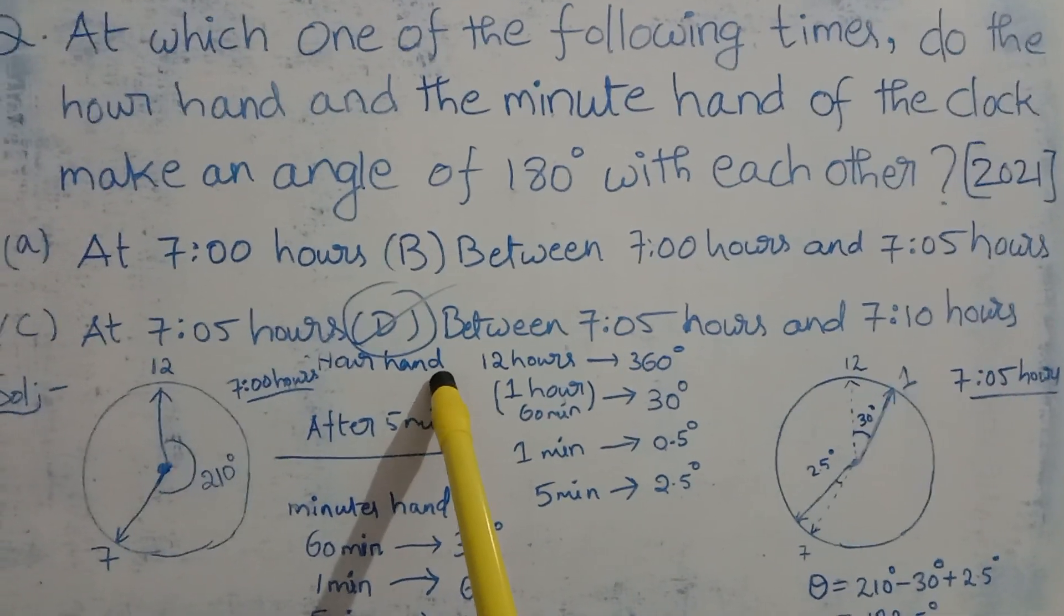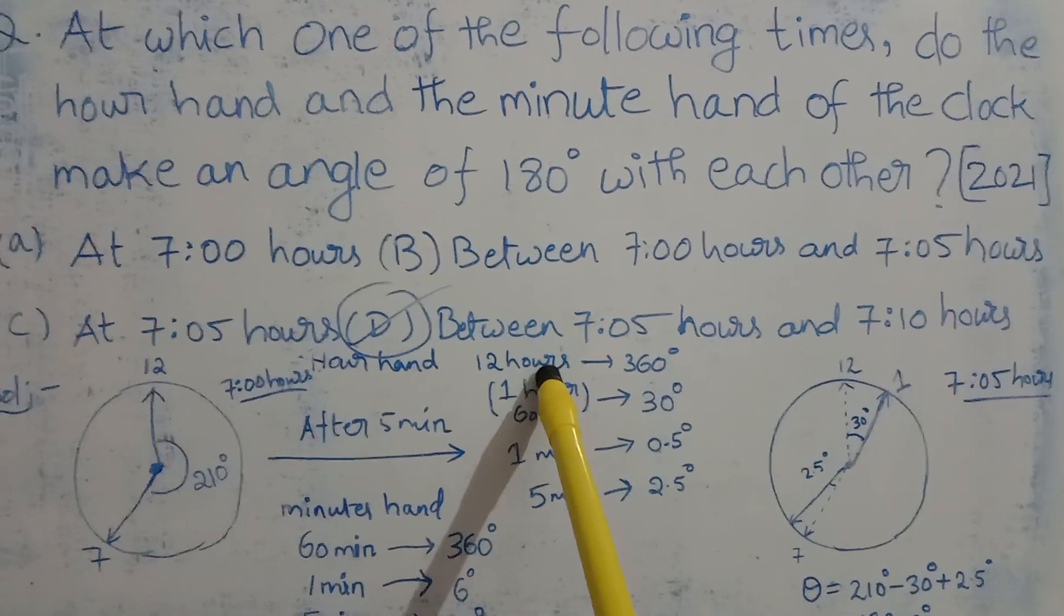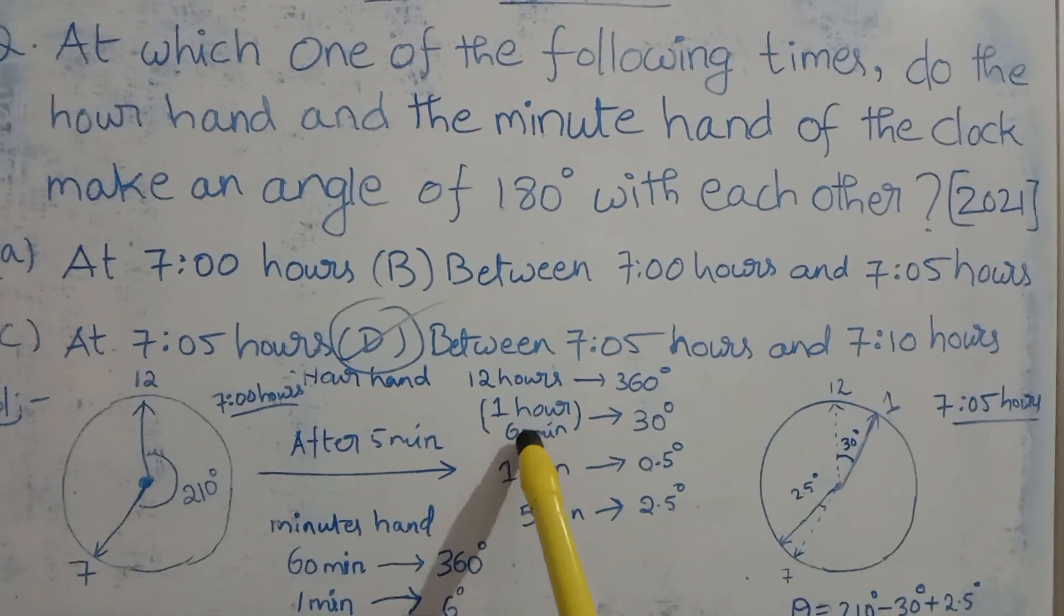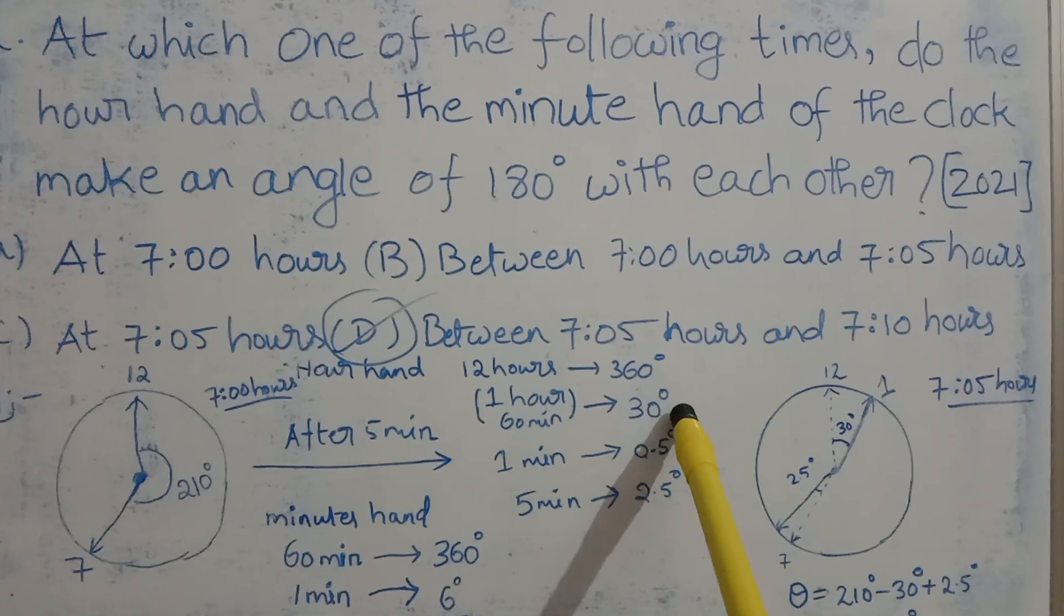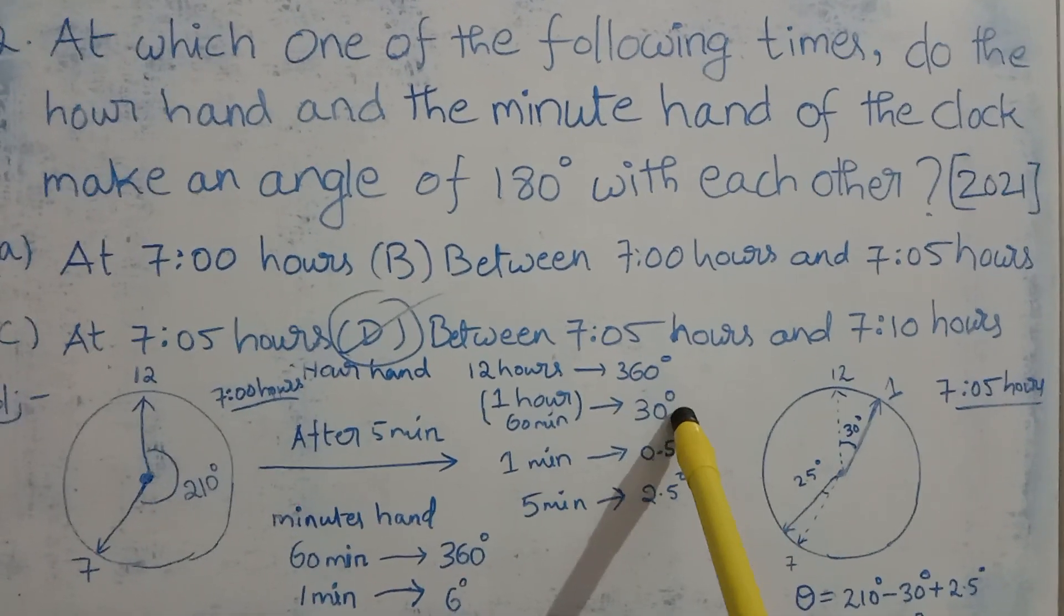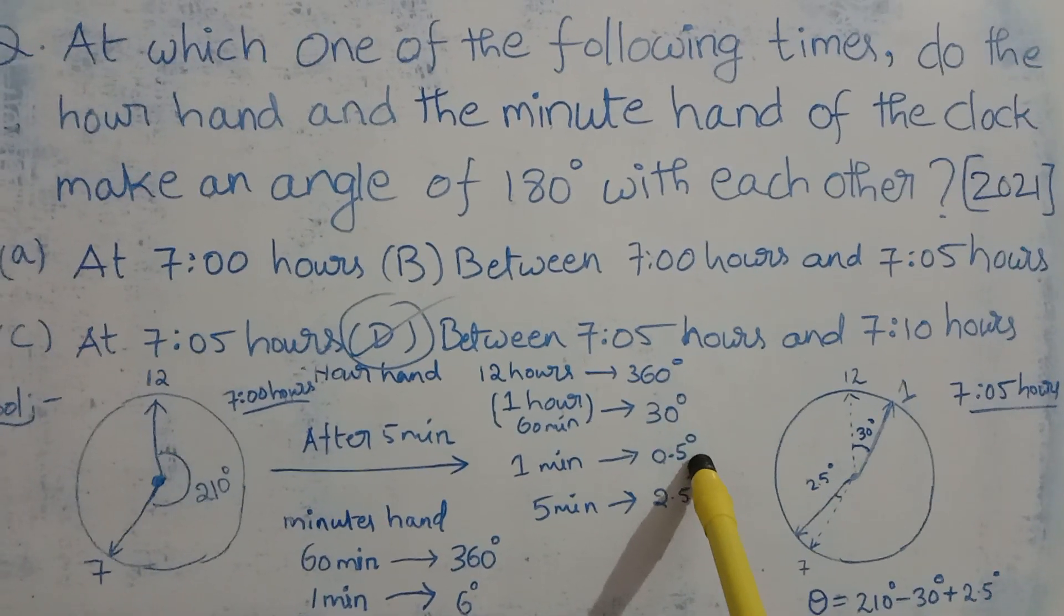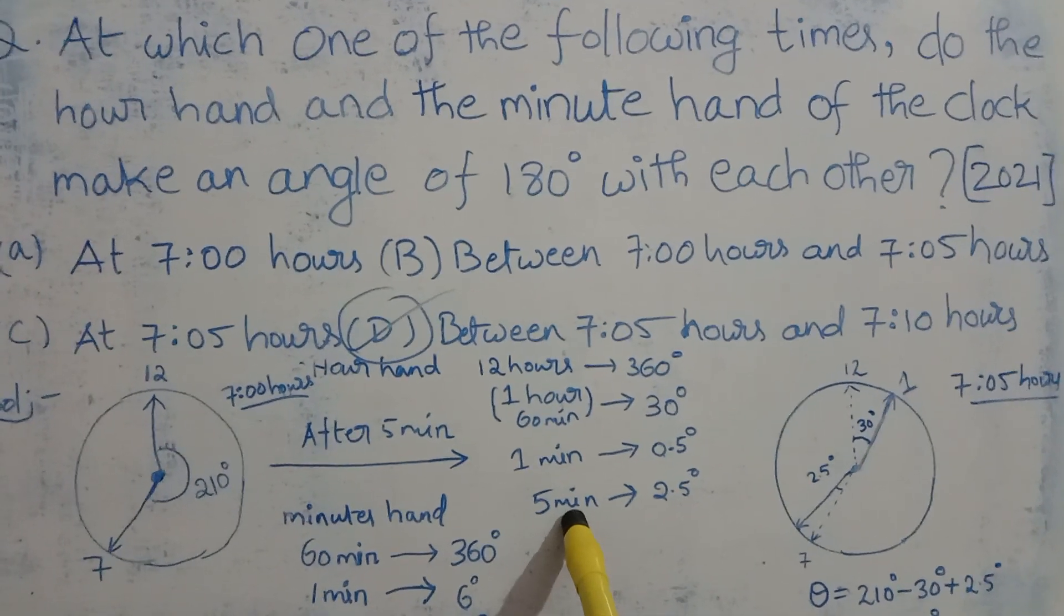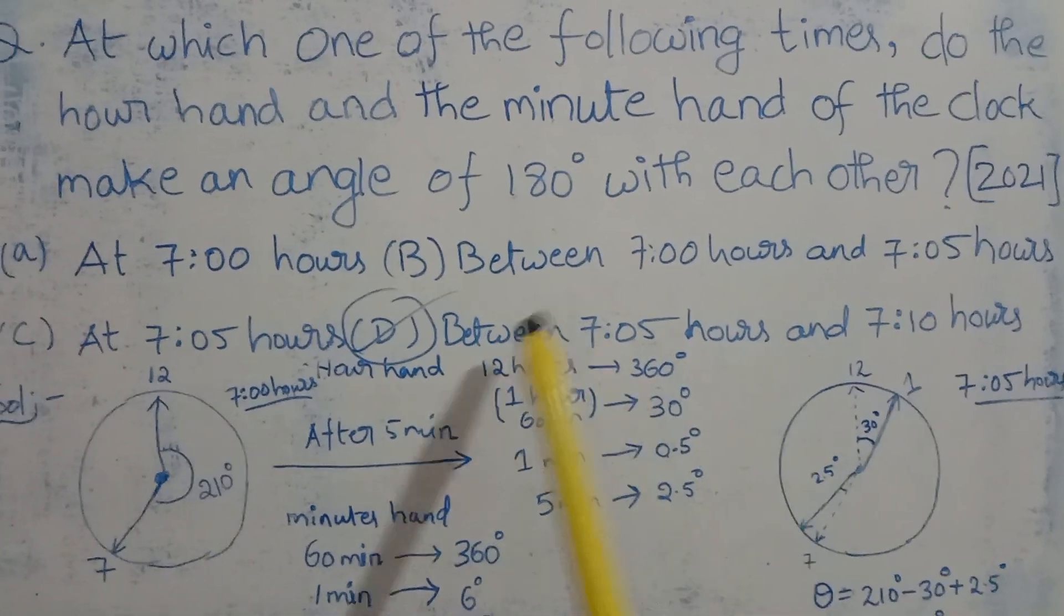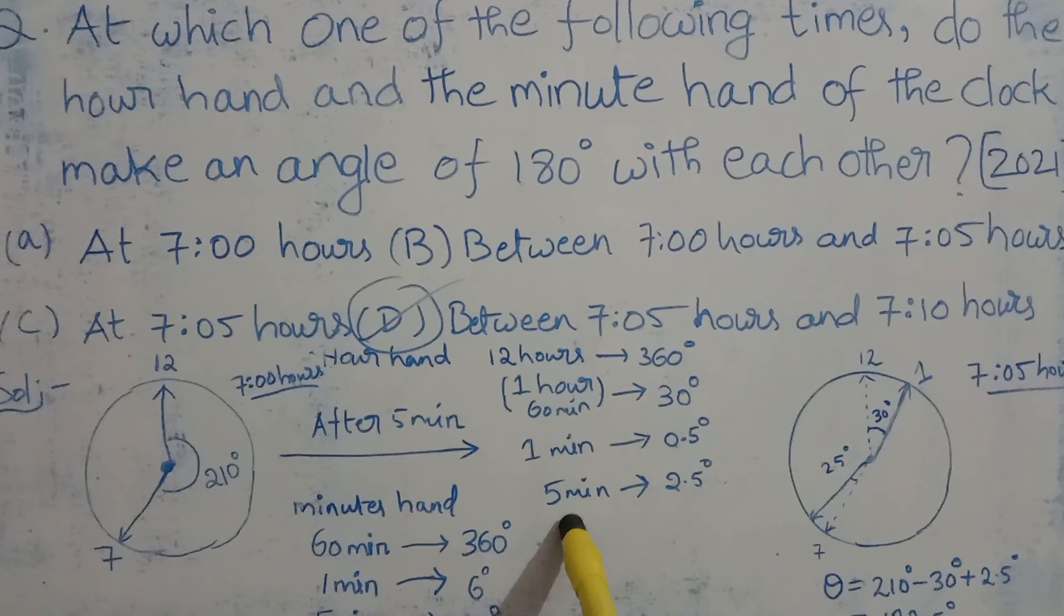The hour hand sweeps an angle of 360 degrees in 12 hours, which means it sweeps 30 degrees in 1 hour. In 60 minutes it sweeps 30 degrees, so in 1 minute it sweeps 0.5 degrees. In 5 minutes it sweeps an angle of 2.5 degrees.